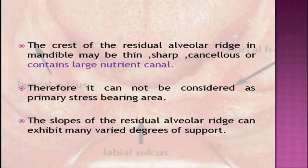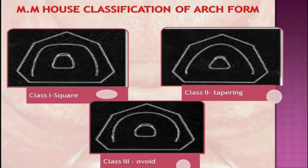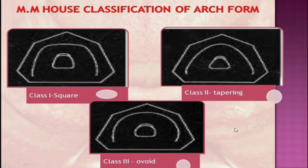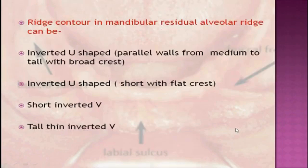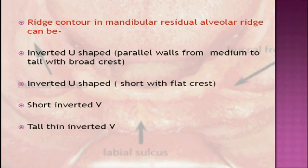The slopes of the residual alveolar ridge can exhibit many varied degrees of support. M.M. House has classified the arch forms, and when viewing the cast, as seen in the picture: Class 1 is square, Class 2 is tapering, and Class 3 is an over-the-ridge contour. The mandibular residual alveolar ridge can be an inverted U-shape — with parallel walls from medium to tall with a broad crest — or short with a flat crest, or a short inverted V, or a tall inverted V.